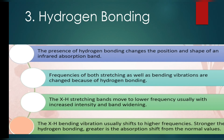For X-H bending vibrations, the effect of hydrogen bonding is the opposite: bending becomes very difficult due to hydrogen bonding, requiring more energy. Therefore, higher frequency is needed for bending vibrations, and the wave number shifts to a higher range.